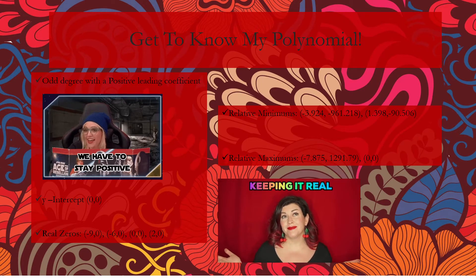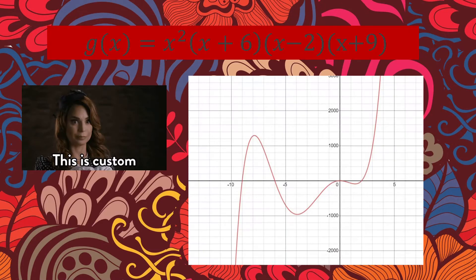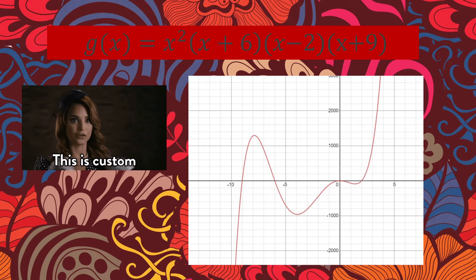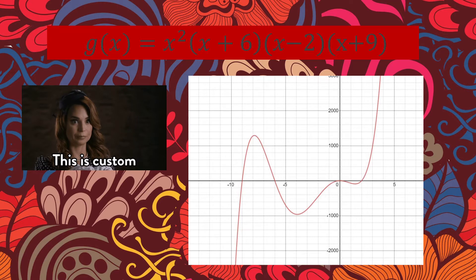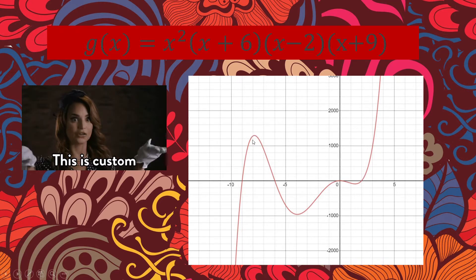Now I'm talking about my polynomial — I'll be flipping back and forth a lot. It's an odd degree with a positive leading coefficient. I know this because its arms are opposite, which makes it odd, and the right arm going up means it's positive. Next, I have listed my relative maximums and minimums.